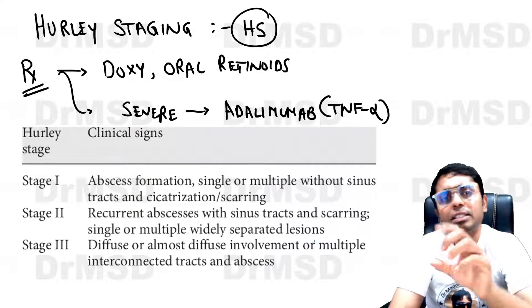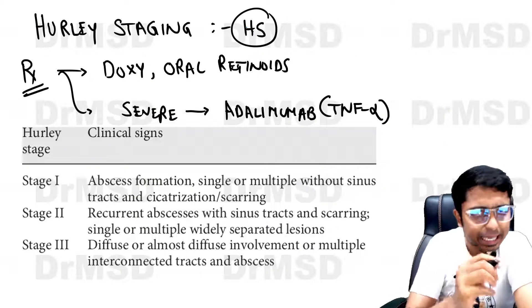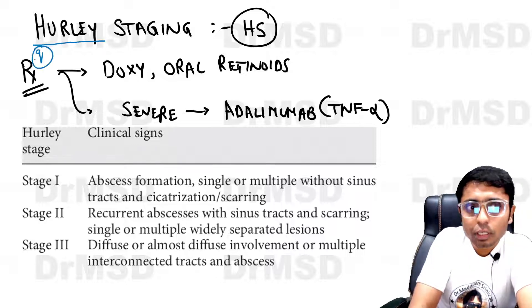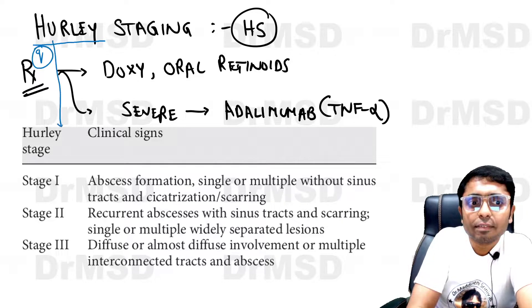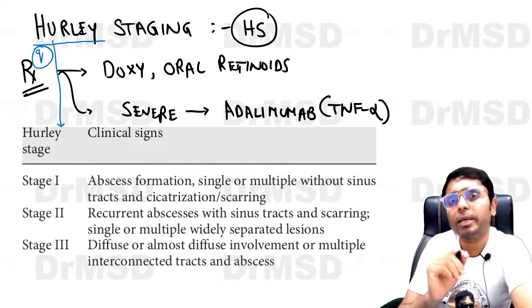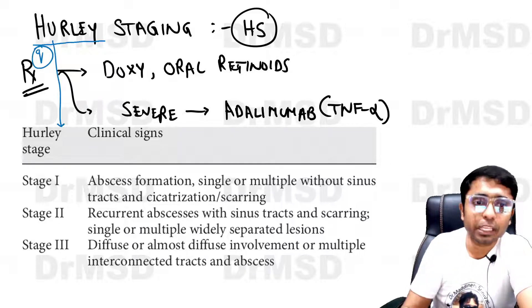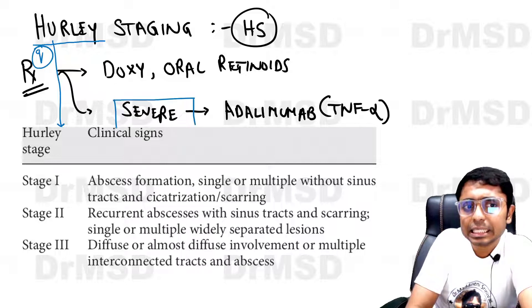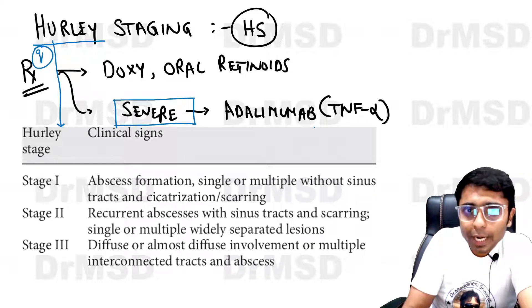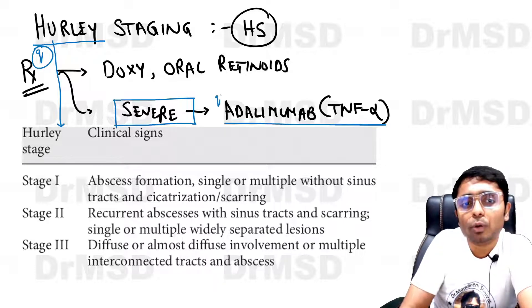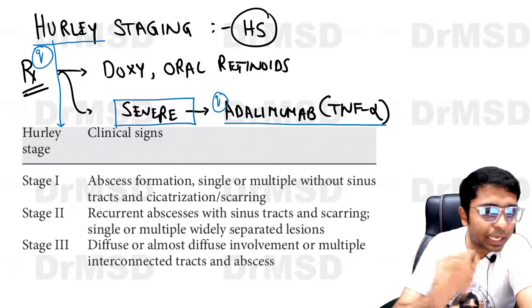Just know a few points about the staging and also treatment. Hurley staging is used to identify the stage of Hidradenitis Suppurativa, depending upon which the treatment will be delivered to the patients. In the treatment part, remember that in the severe form, the monoclonal antibody which is a tumor necrosis factor alpha inhibitor — that is adalimumab — has been approved for usage in Hidradenitis Suppurativa patients.